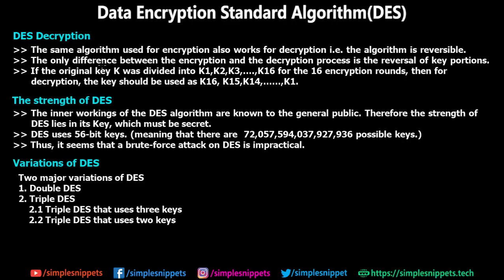For decryption, the same DES algorithm is used because it is symmetric and reversible. The only difference between encryption and decryption is the reversal of key order. If the encryption rounds used keys K1, K2, ..., K16, then decryption uses K16, K15, ..., K1. With the keys reversed, all other steps in reverse order provide the proper decryption.